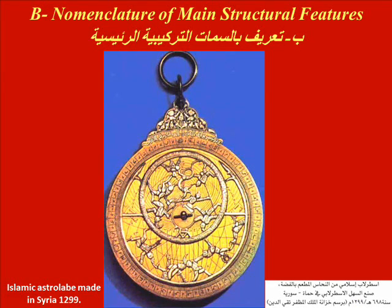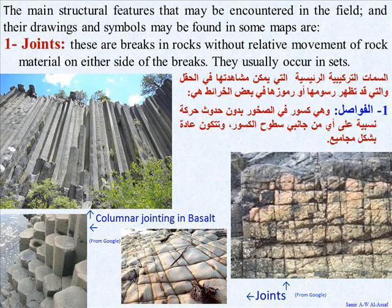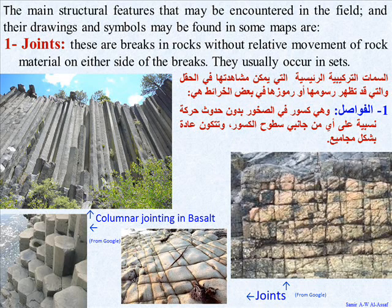Nomenclature of main structural features. The main structural features that may be encountered in the field, with their drawings and symbols, include: 1. Joints — these are breaks in rocks without relative movement of rock material on either side of the break. They usually occur in sets.